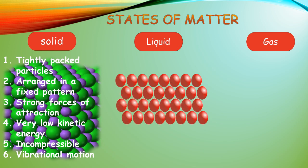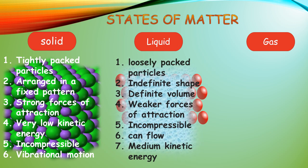In liquids, as you can see in the diagram, the particles have some spaces between them, due to which they can flow. The particles are still close to each other but not in a lattice, which is why liquids have indefinite shape. The forces that hold the particles together are weaker than those present in a solid. In short, liquids have loosely packed particles, indefinite shape, definite volume, weaker forces of attraction than solids. They are incompressible, they can flow, and their particles have medium kinetic energy.